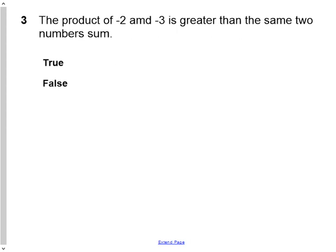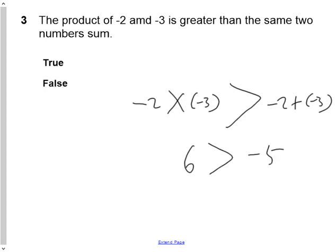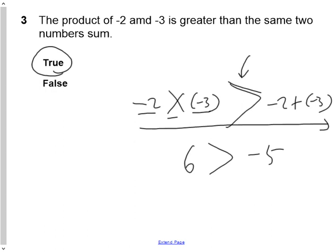Question 3 says: the product of negative 2 and negative 3 is greater than the same two numbers' sum. So negative 2 times negative 3 is going to be greater than negative 2 plus negative 3. You have to solve both sides. The product of negative 2 and negative 3 is positive 6. The sum of those two is negative 5. Is positive 6 greater than negative 5? Yes. So the answer is true. Remember, as you read from left to right, if the symbol is eating what you just said, it's greater than; if not, it's less than.